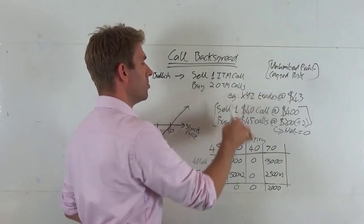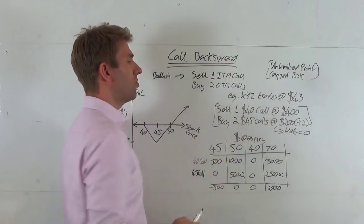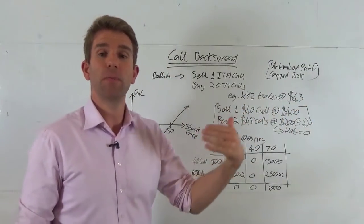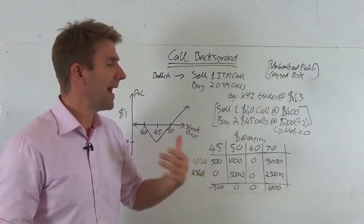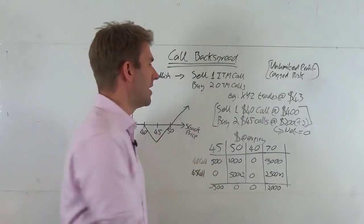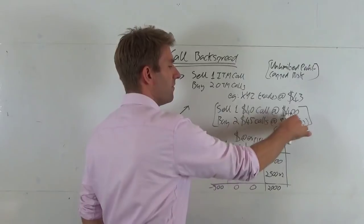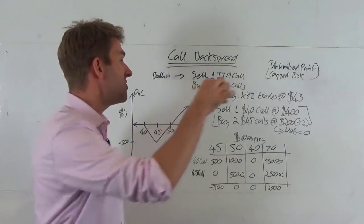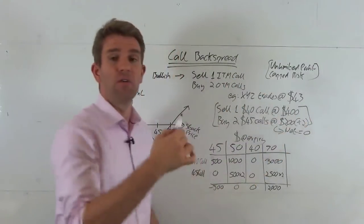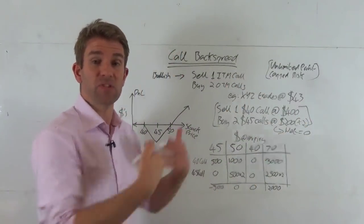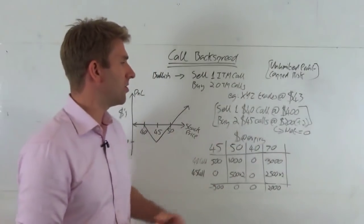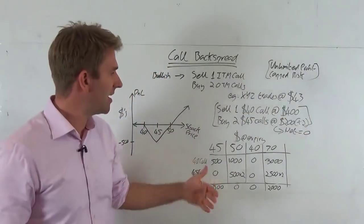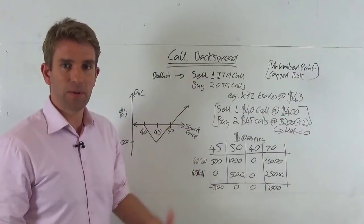We're selling our in the money call, which is our $40 call because it's currently trading at $43. In the money is basically a call that is below the current price because it has some intrinsic value and it's got some premium as well. We're selling this at $400. It's priced at $4. One options contract is 100 shares. We receive $400 for that. We are the other side of the deal. Someone's paying us $400 for that, and don't forget it's $300 worth of intrinsic value and $100 worth of premium.